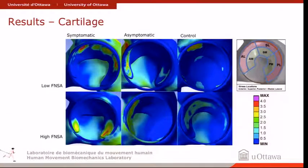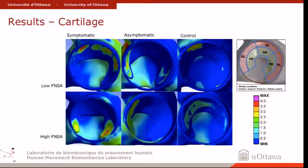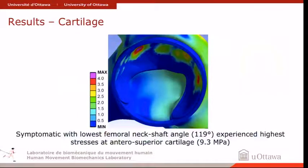Looking at low versus high neck shaft angle — symptomatic, asymptomatic, and control — as you would expect, the stresses are located in the anterior superior quadrant, consistent with the area of damage that we see at the time of surgery. Looking at where most of the stresses were applied on the cartilage side, again the ones with the lower neck shaft angle had the most stresses.